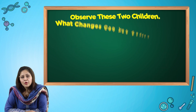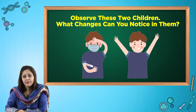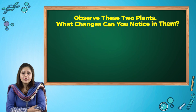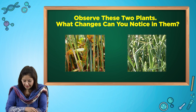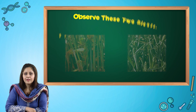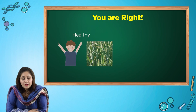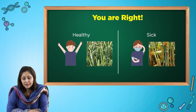Now observe these two children — what changes can you notice in them? Now let's observe these two plants — what changes can you notice in them? You are right. So one child and one plant were healthy, and one child and one plant were sick.